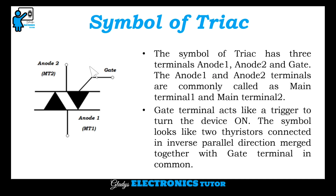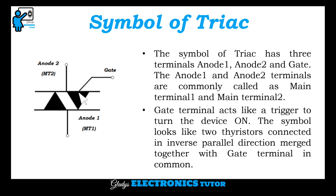This is the symbol of TRIAC. The symbol of TRIAC has three terminals: anode one, anode two, and the gate. The anode one and anode two terminals are commonly called main terminal one and main terminal two. The gate terminal acts like a trigger to turn the device on. The symbol looks like two thyristors connected in inverse parallel direction merged together with a gate terminal in common.